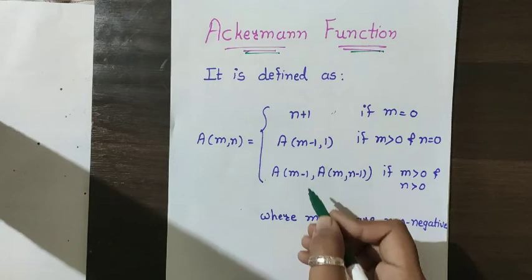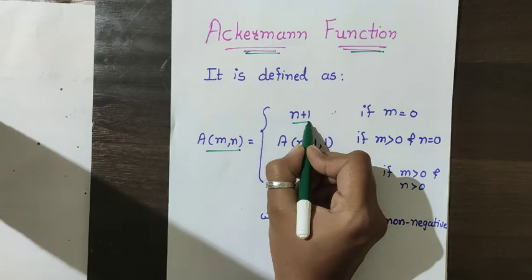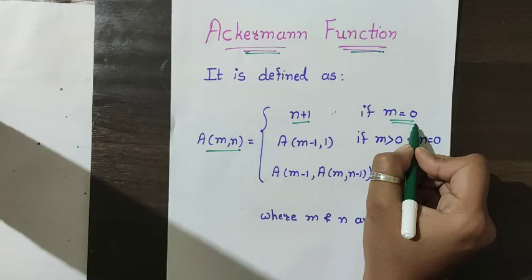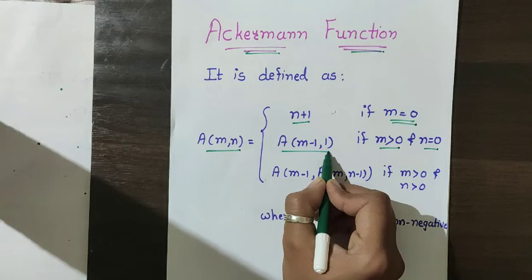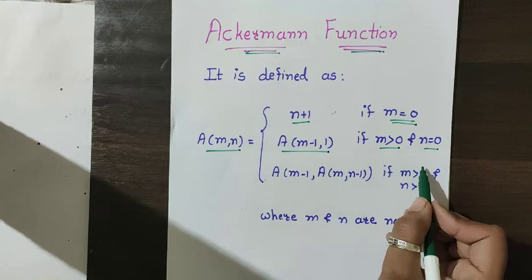This is the formula. It is defined as: a(m,n) equals n plus 1 if m is equal to 0. If m is greater than 0 and n is equal to 0, then a(m,n) equals a(m minus 1, 1).